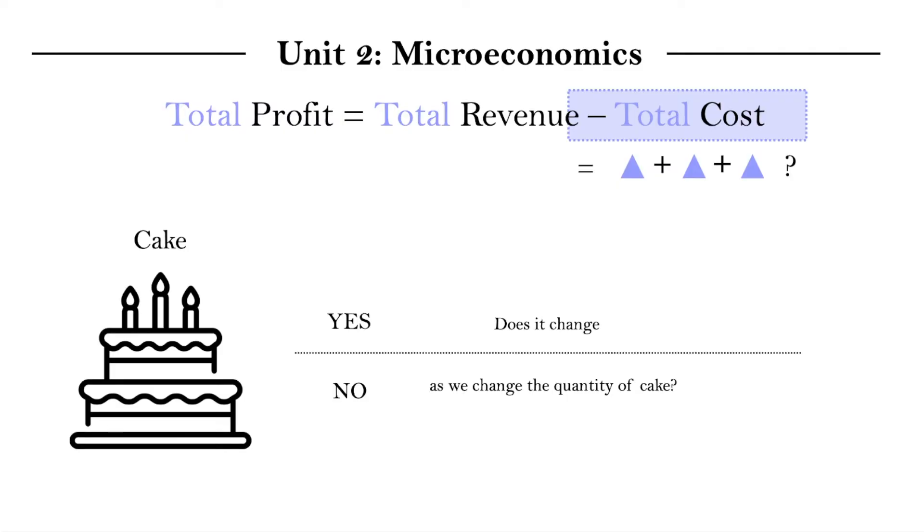So let's think about one example of a cost. We can think about an ingredient, let's just say flour, which we can also call an input that goes into producing the output, which is the cake. Now, as we're increasing the quantity of cake, we're making more cakes. Does the cost of purchasing the ingredient, amount of money spent purchasing flour, increase? And the answer is yes, it does. We need more flour if we're going to make more cake.